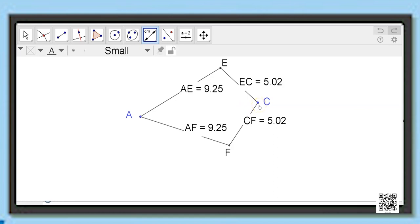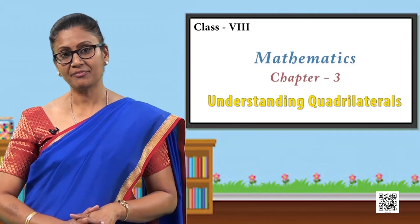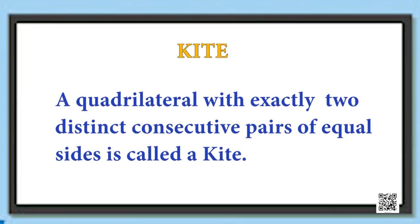So what can you generalize from here? A kite has exactly two distinct consecutive pairs of sides which are of equal length. A quadrilateral with exactly two distinct consecutive pairs of equal sides is called a kite.